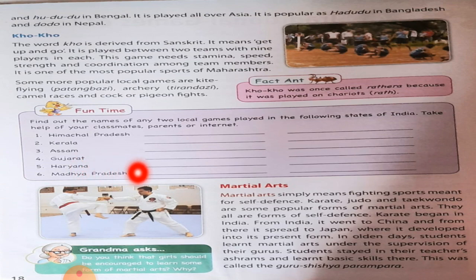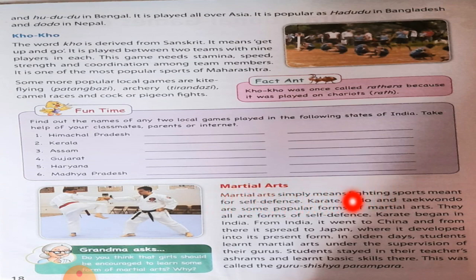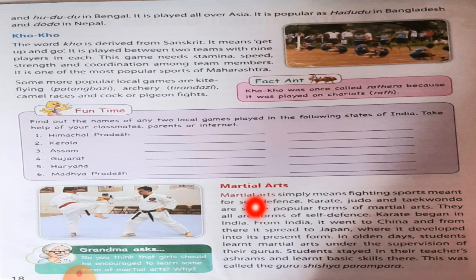Now about Martial Arts. Martial Arts simply means fighting sports for self-defense. Karate, Judo, and Taekwondo are some popular forms of martial arts. They all are forms of self-defense. Karate began in India. From India, it went to China and from there it spread to Japan, where it developed into its present form. In older days, students learned martial arts under the supervision of their gurus.